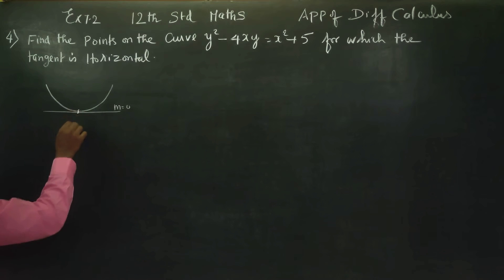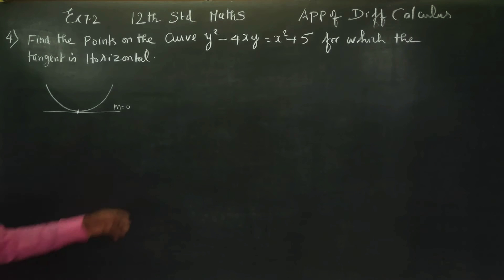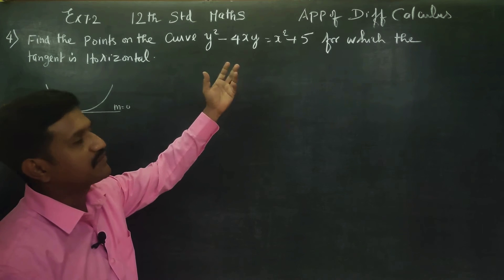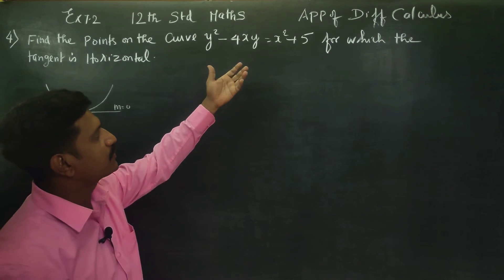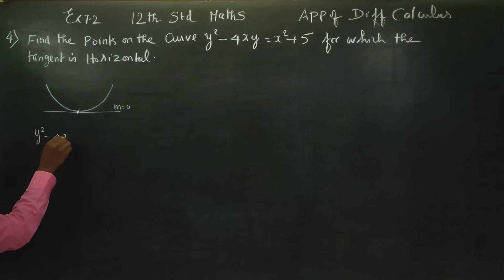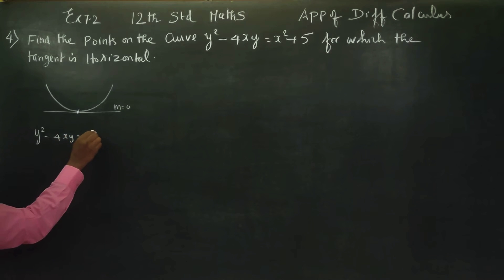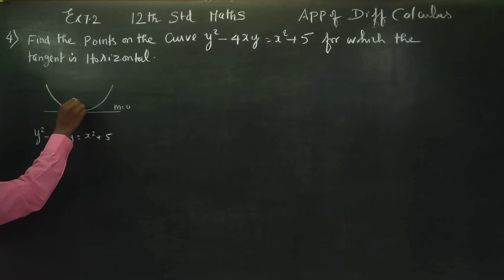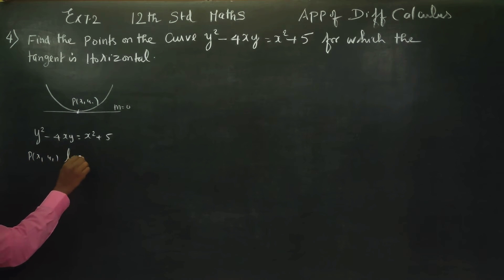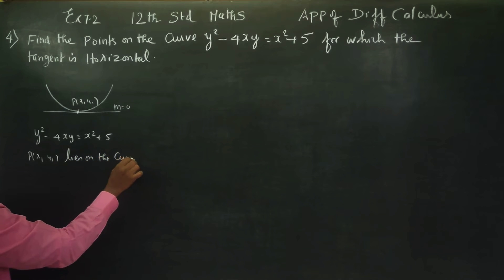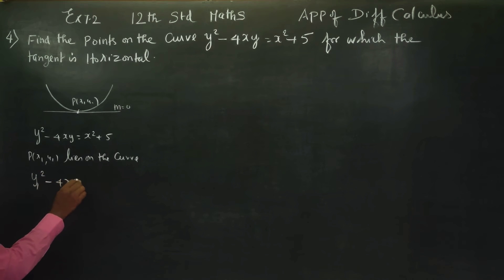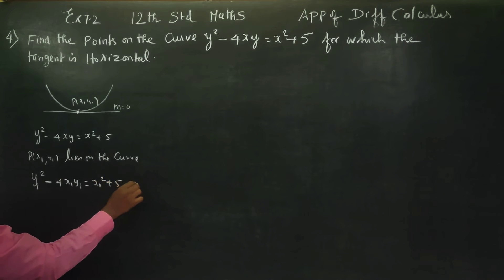We will use the conventional method of differential calculus and apply differentiation. The curve is given as y squared minus 4xy equals x squared plus 5. We say that the point (x1, y1) lies on the curve, so we get: y1 squared minus 4x1·y1 equals x1 squared plus 5. This is equation number 1.